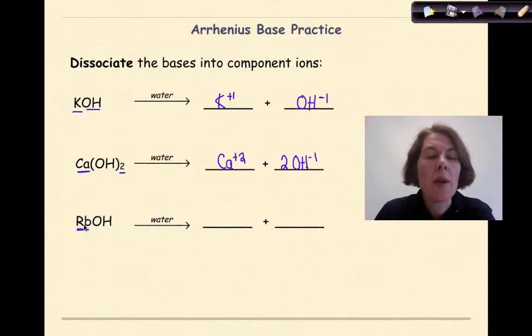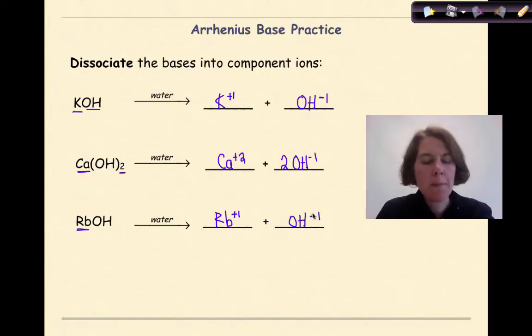Then finally, RbOH. Rubidium is coming from group 1, so Rb plus 1, and it's in a 1 to 1 ratio with the hydroxide, so OH-1.